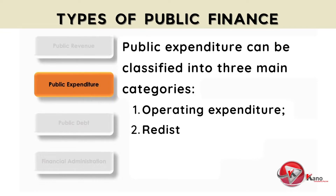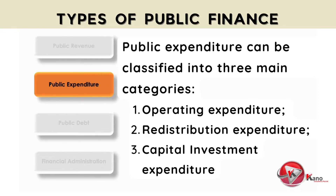The next category is redistribution expenditure, which focuses on using government spending to address inequalities within society, either through social welfare or subsidies granted to companies and households. As well as capital investment expenditure, which is aimed at increasing public capital expenditure, either through research and development expenditure or the construction of buildings and infrastructure.